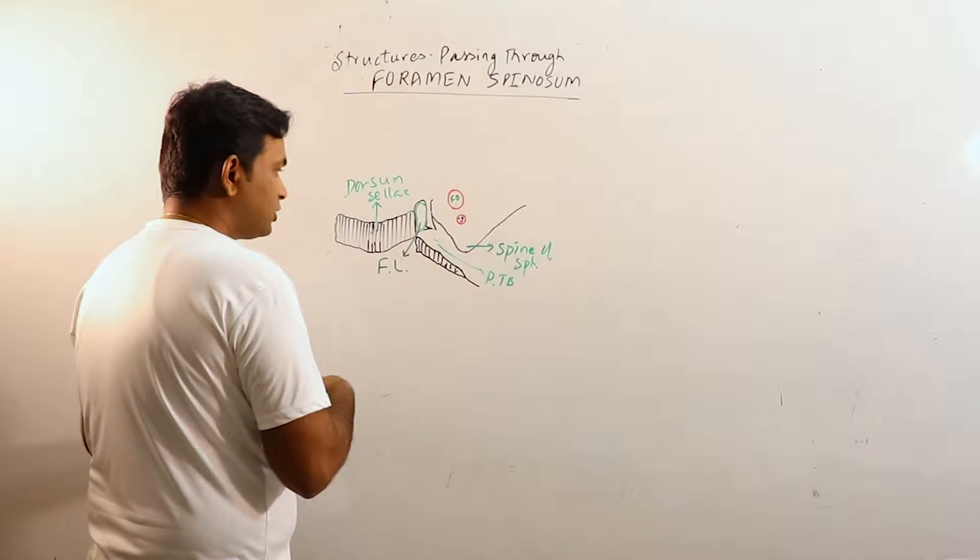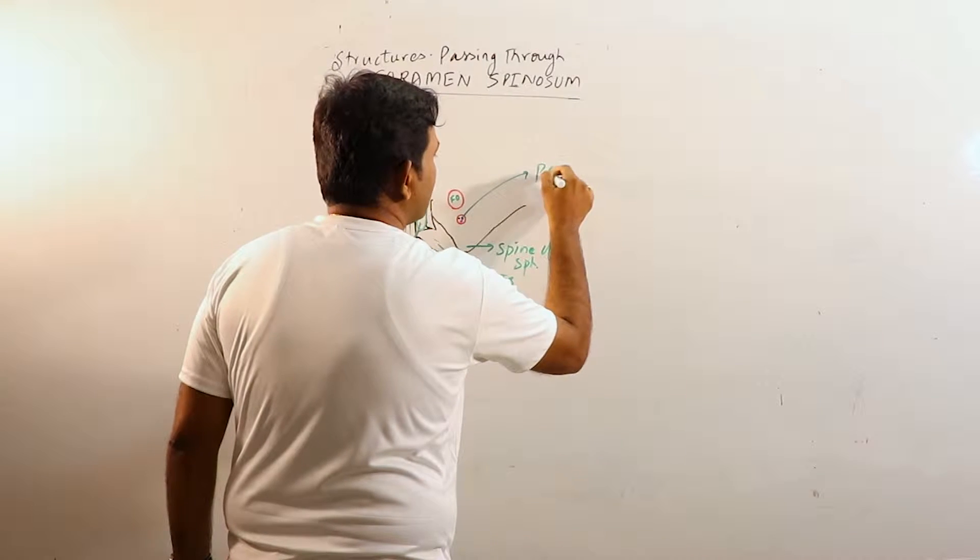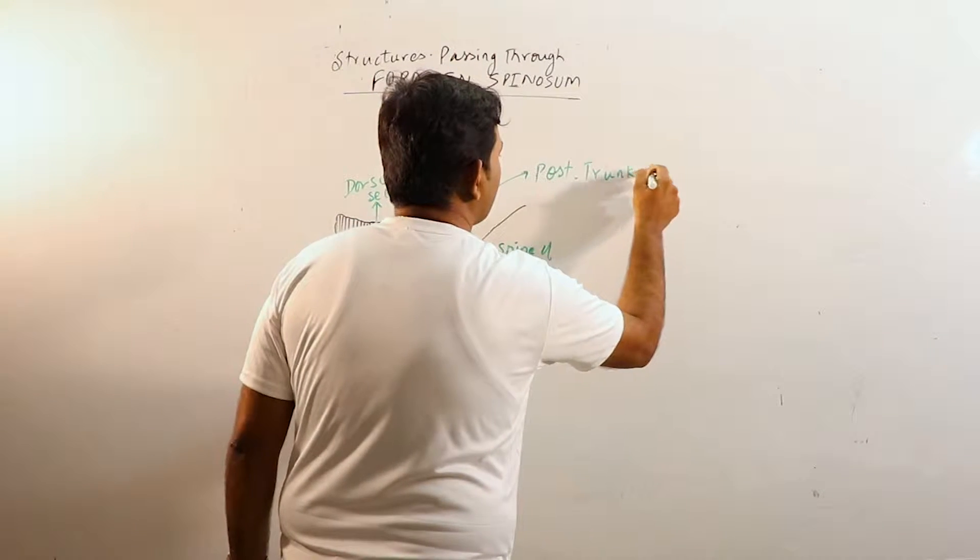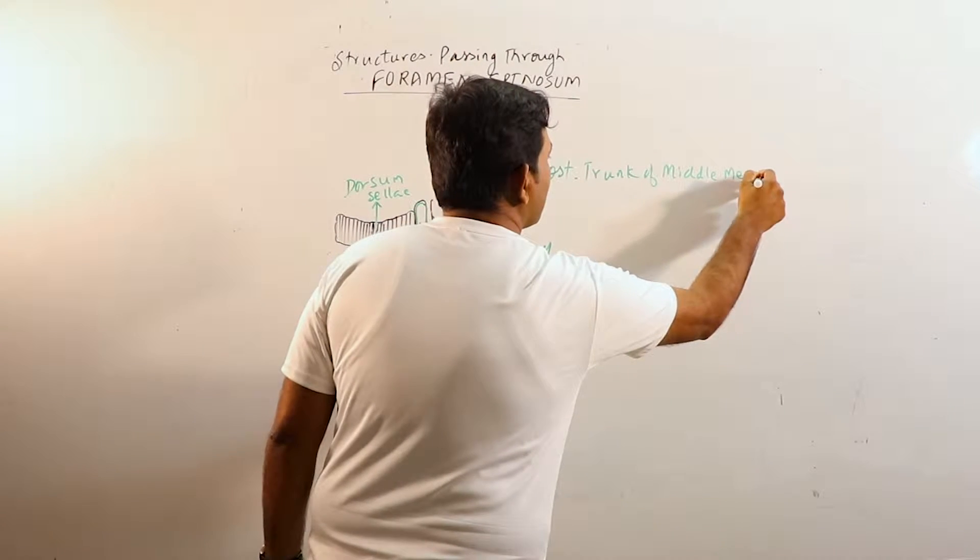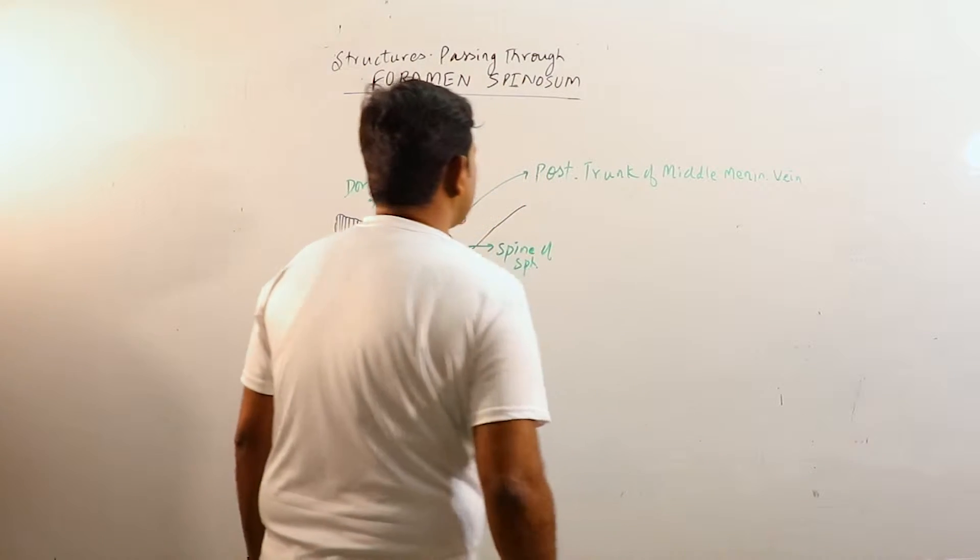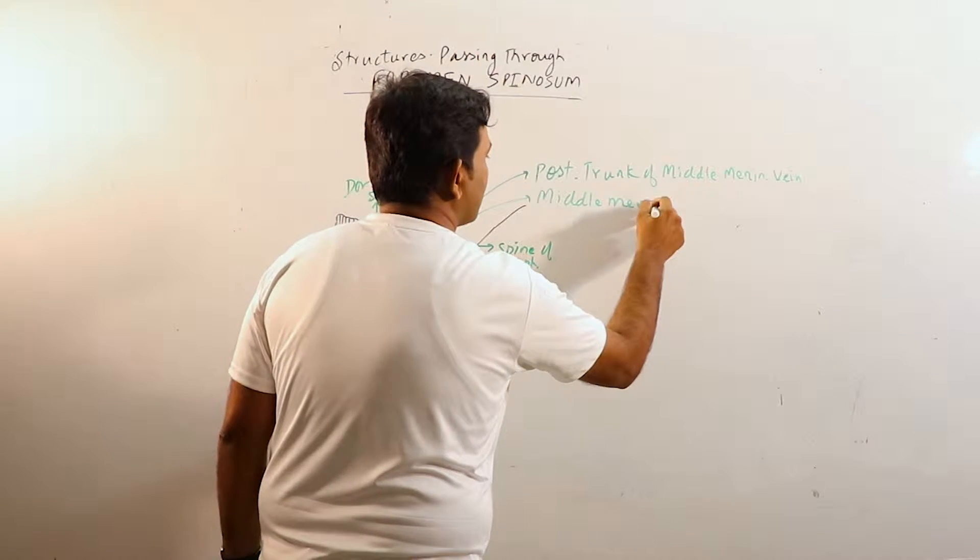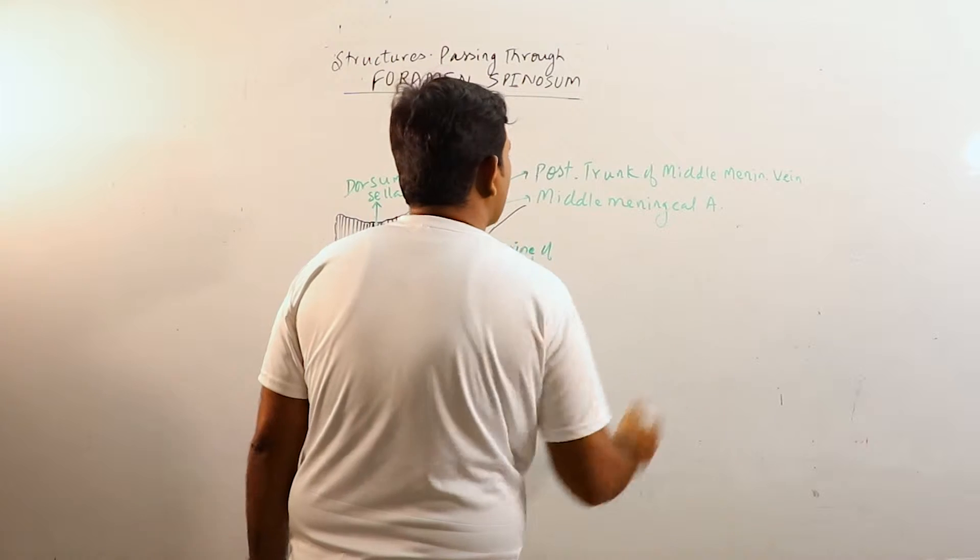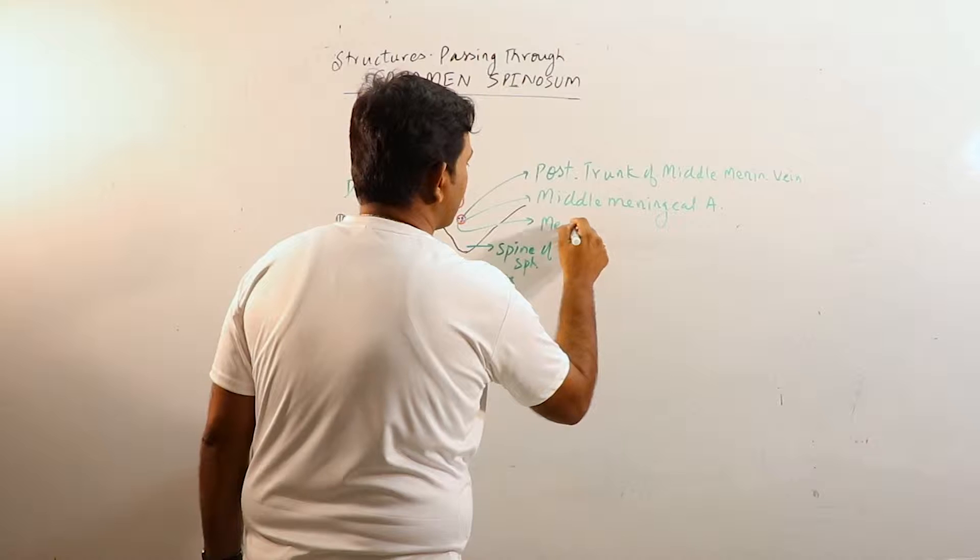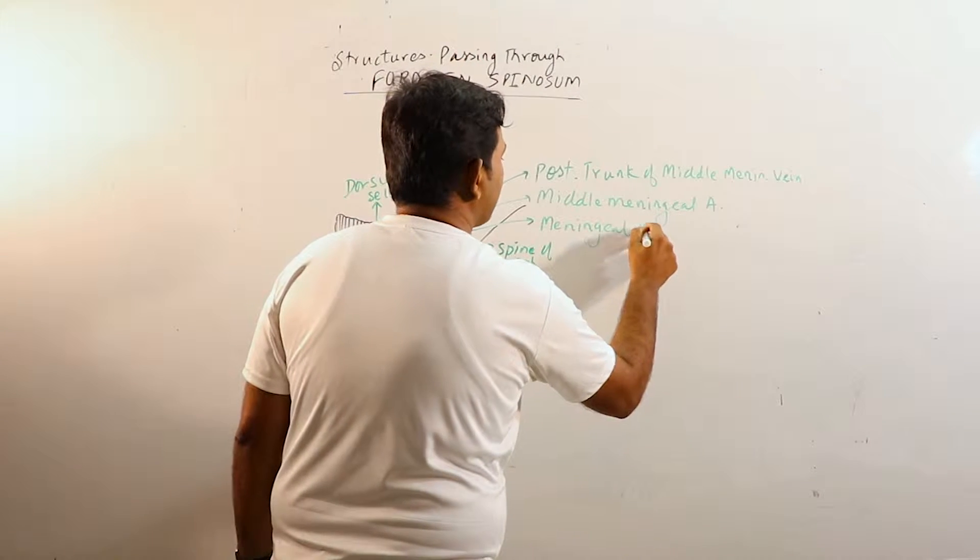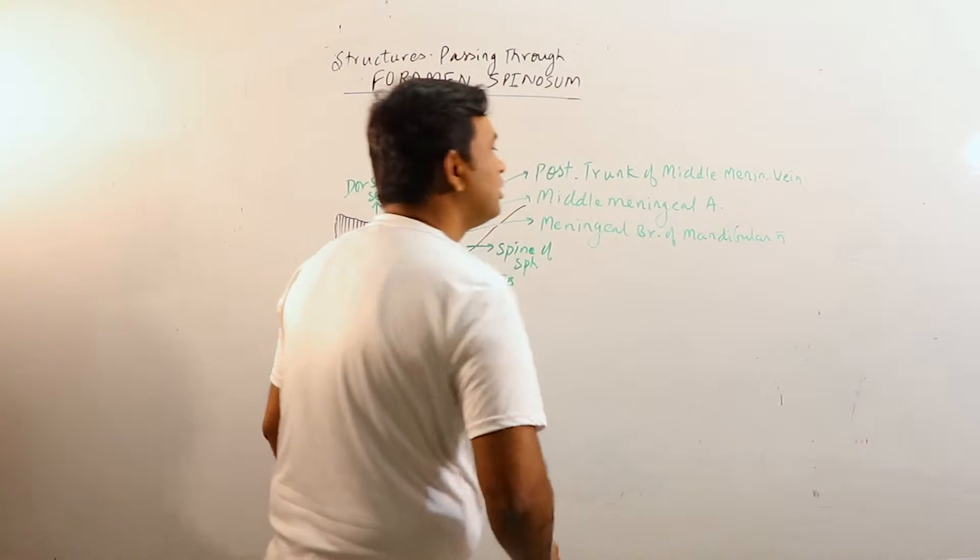Now these structures are: this is the posterior trunk of middle meningeal vein, this is middle meningeal artery, and this one is meningeal branch of mandibular nerve.